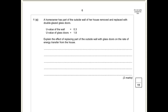1C. So a homeowner has part of the outside wall of her house removed and replaced with double glazed glass doors. You can see that the U value of the glass doors is much higher than the U value of the wall. Explain the effect of replacing part of the outside wall with glass doors on the rate of energy transfer from the house. Well, a higher U value means it's less good as an insulator. So the energy transfer is going to increase. You get one mark for that, and the second mark was for explaining that the glass is not as good an insulator as the wall.